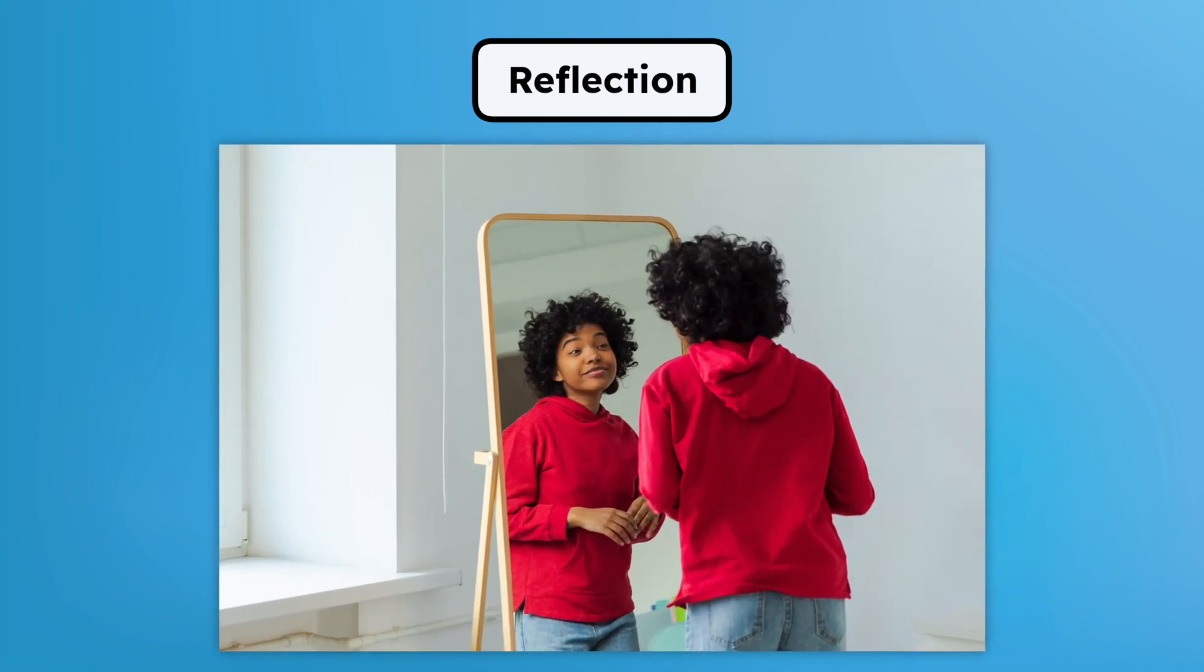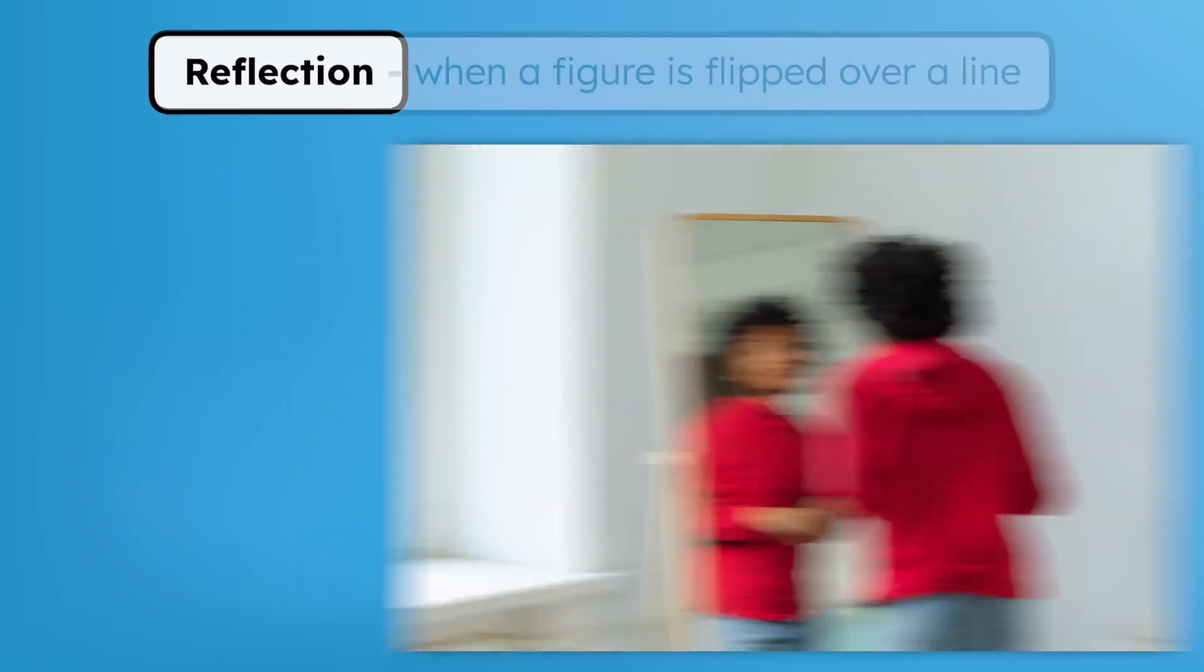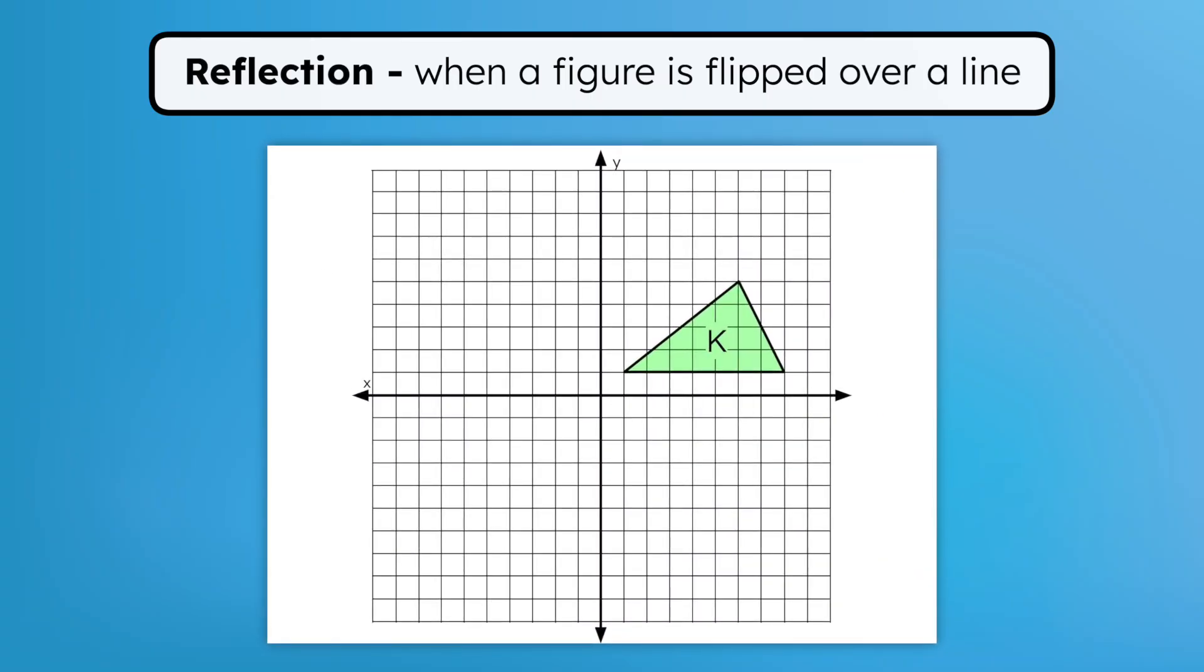Reflection is another type of transformation. When you look at your reflection in a mirror, the image is a flipped version of your actual face. Reflection is when a figure is flipped over a line. See figure K here? Imagine that the Y axis line is the mirror. If we reflect the pre-image figure K over the Y axis, its flipped version will appear on the other side of the Y axis.